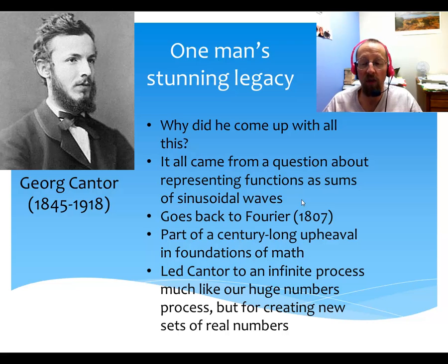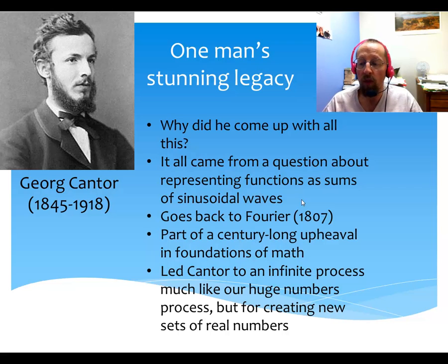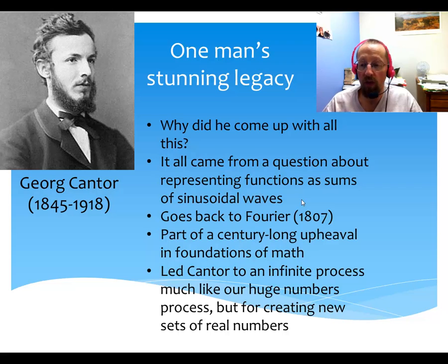People realized the problem was not with Fourier's ideas — it was with the basics of calculus and the very loose, unrigorous way in which people had understood them. So people like Cauchy, Weierstrass, Dedekind, and many others in the mid-19th century started to revamp mathematics in a much more rigorous way, especially calculus, and that led to the modern notion of mathematics.